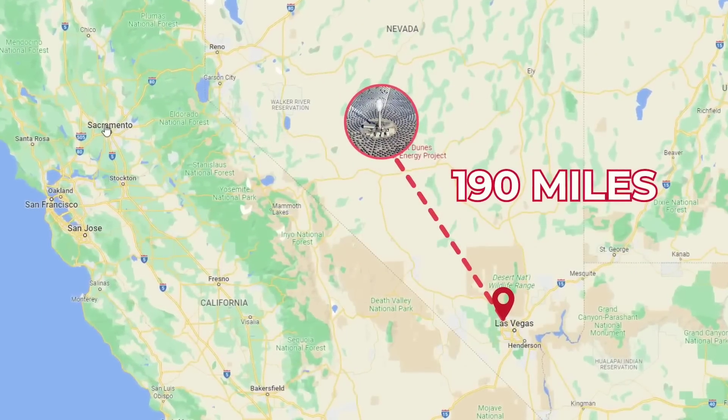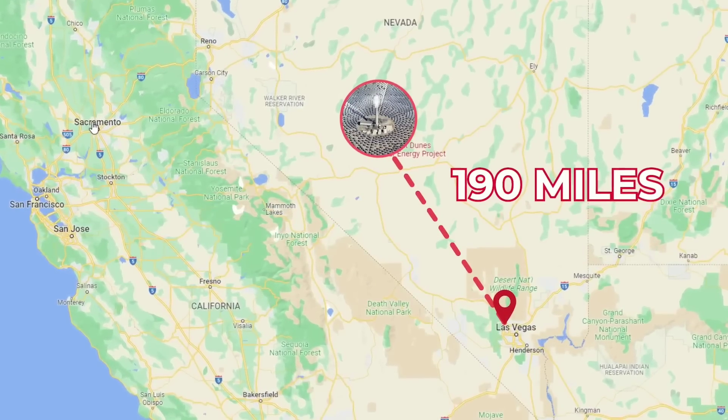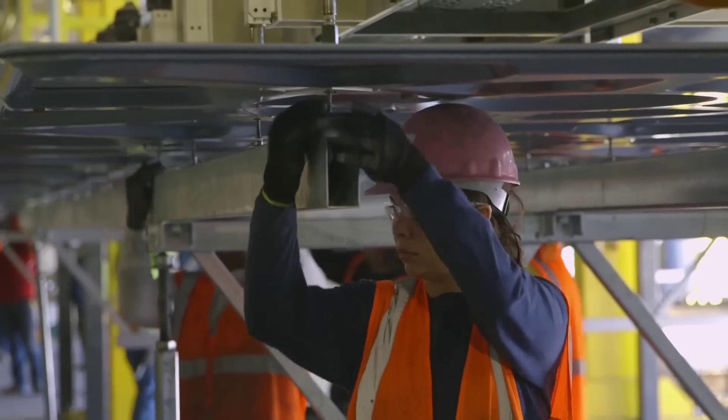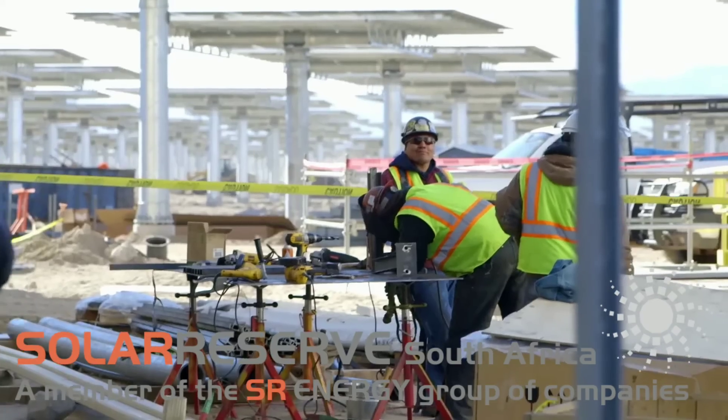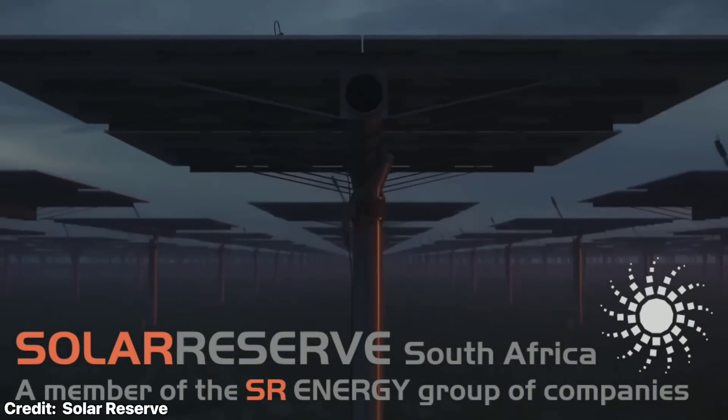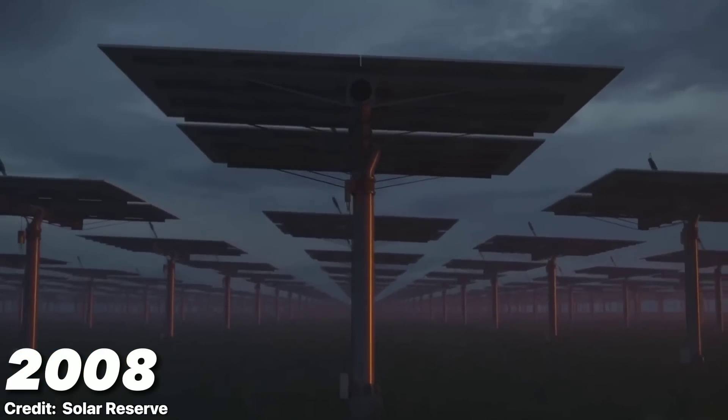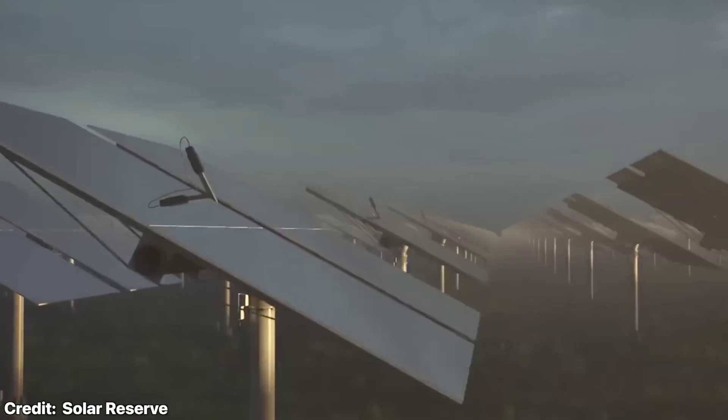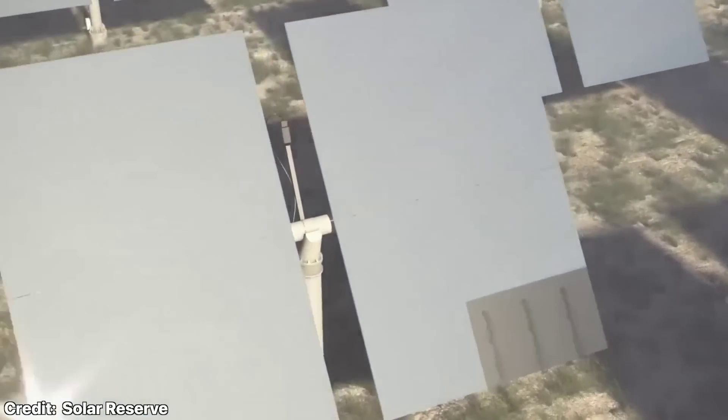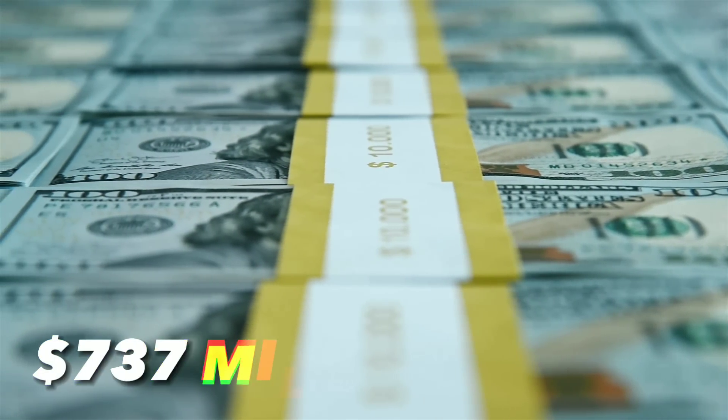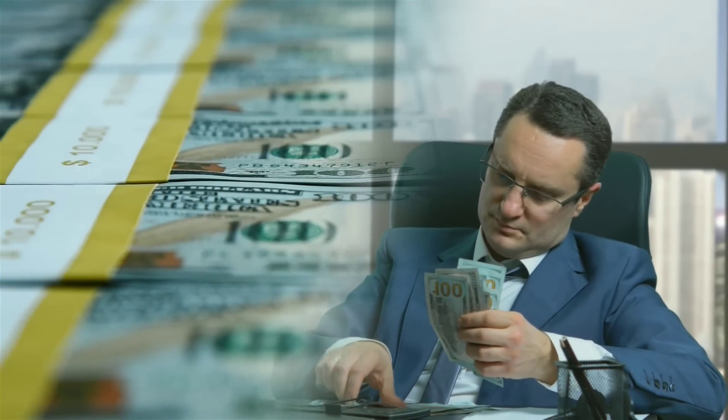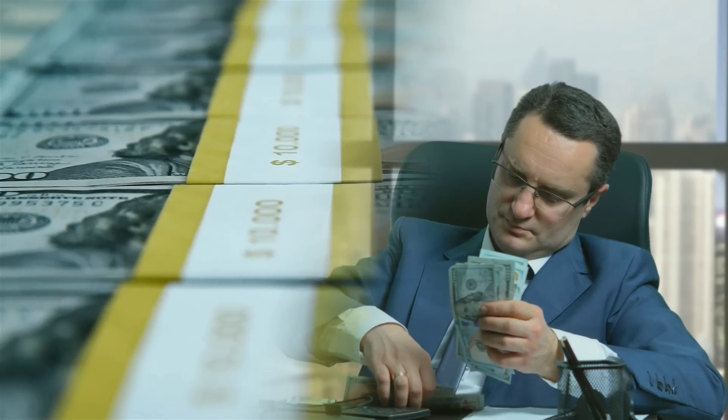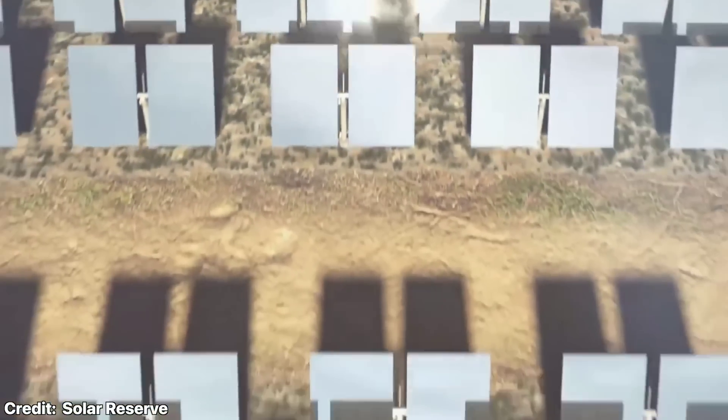The plant was located about 190 miles northwest of Las Vegas, near Tonopah, and was owned and operated by Solar Reserve, a startup energy company founded in 2008 with support from U.S. Renewables Group and United Technologies. The project also received a $737 million loan guarantee from the U.S. government and partnered with Cobra Thermosolar Plants, a Spanish engineering firm.